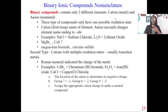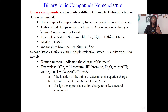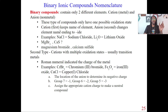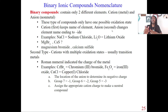Binary ionic compounds only have one possible charge. When we go to name these compounds, you follow this rule: your cation — your metal — goes first, and because it's first, you keep the name of that element the same. Your anion is second, and because it's second, you change that element's name ending to '-ide'.